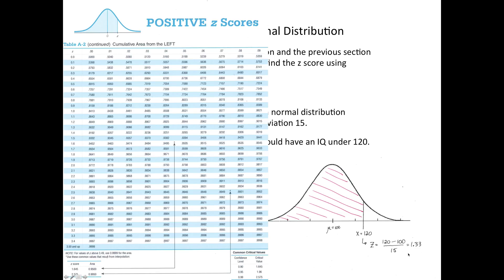Then get Table A2 for positive z-scores and look up 1.33. Notice that this shaded area matches what the table gives, so whatever answer we get from the table is the final answer. Looking up 1.33 gives us 0.9082, and that's the answer.